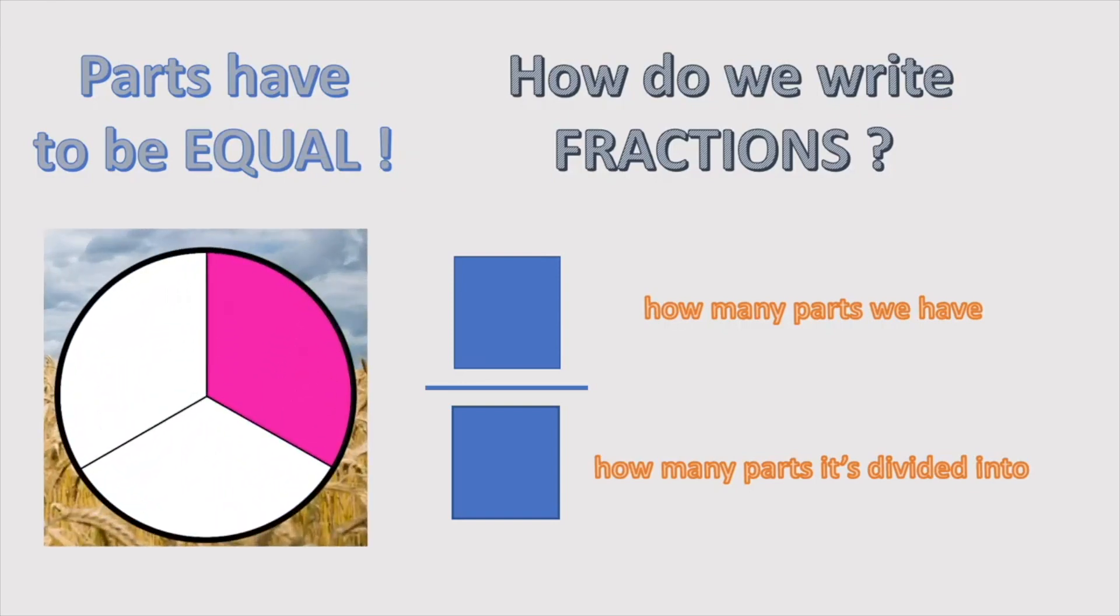The shaded part represents the part that is taken away. How many parts is the whole divided into? Correct! Three.